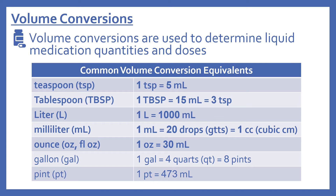Drops is often abbreviated GTTS, and one milliliter also equals one cc, which stands for cubic centimeter. For ounce, abbreviated OZ or fluid ounce, one ounce equals 30 milliliters. One gallon (GAL) equals four quarts, which equals eight pints. And one pint (PT) equals 473 milliliters. The last two aren't as common, but they're still ones you need to know.